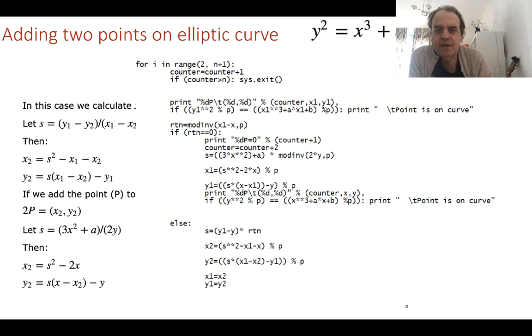So the code for this, if we want to print out the values of two times a point, three times a point, four times a point and so on, is this.